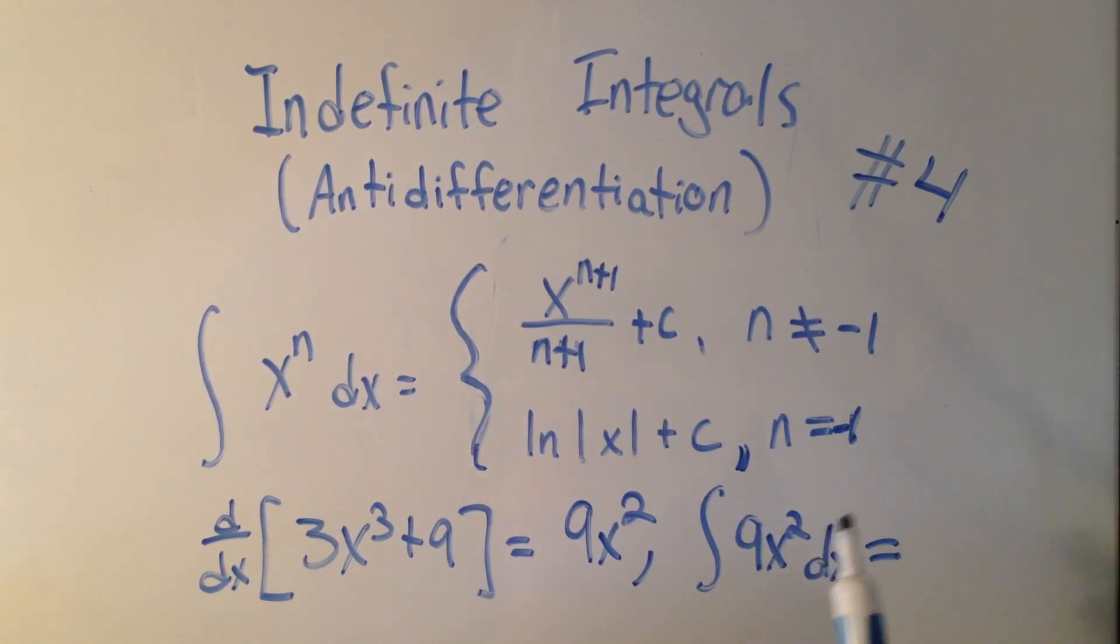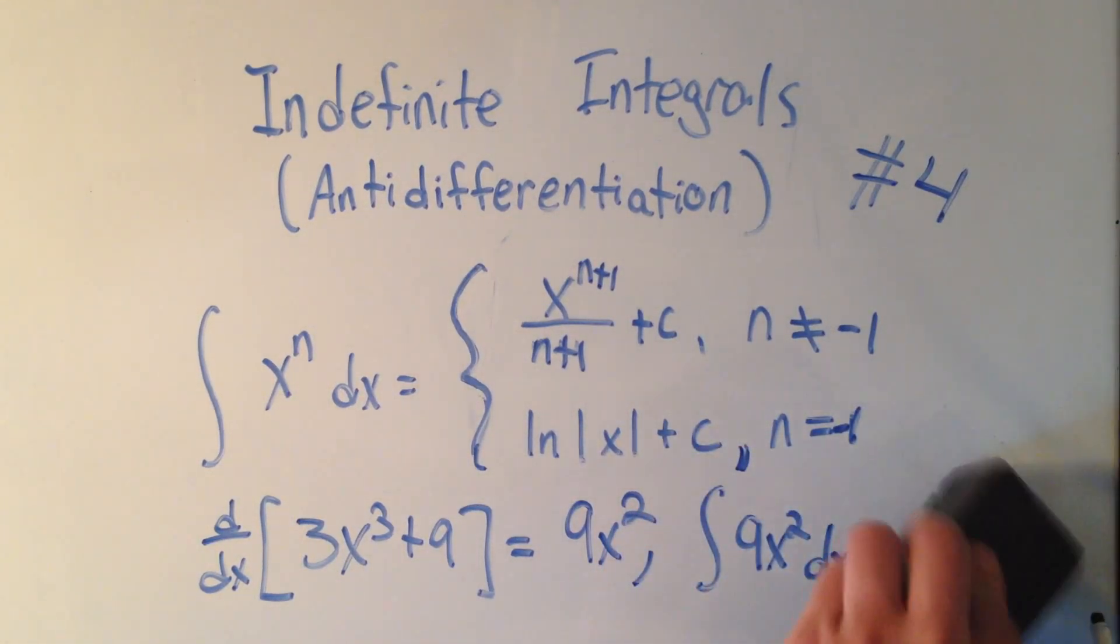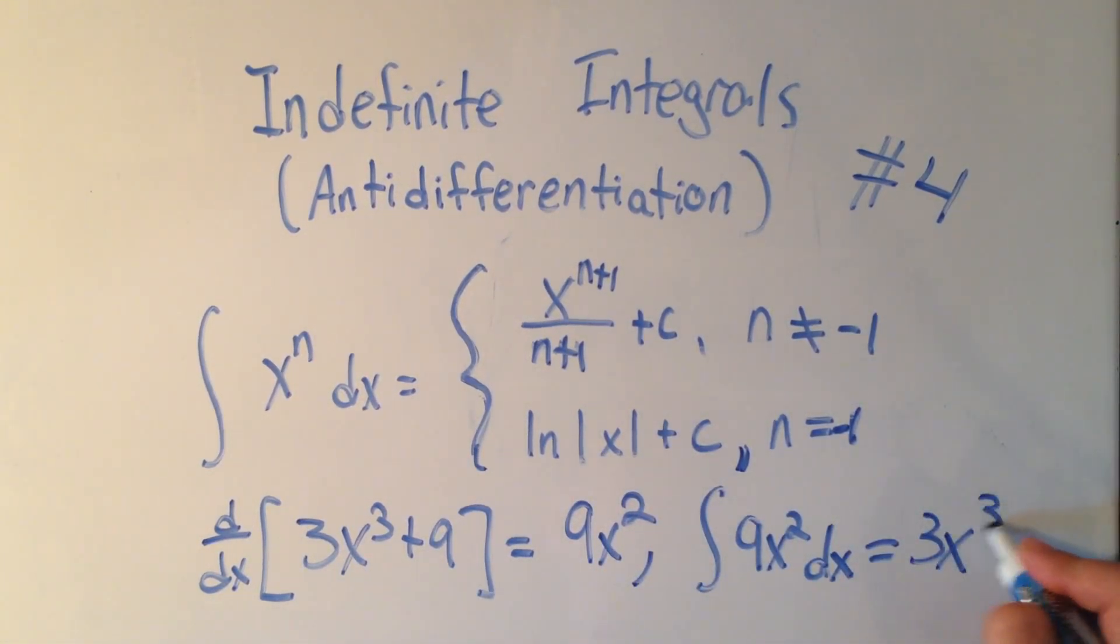The power of x is not negative 1. That means I'm just doing regular anti-differentiation. Add 1 to the power and divide by the new power. So 2 plus 1 is 3, and then I divide by the new power. It looks like I'm running out of room. 9 over 3 is just 3, so this will become 3x cubed. Great, that makes sense.